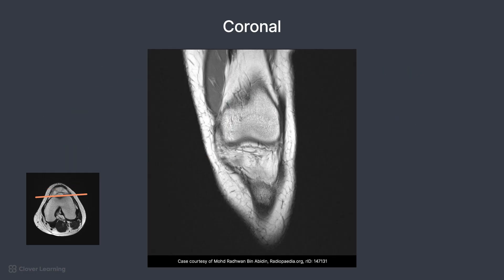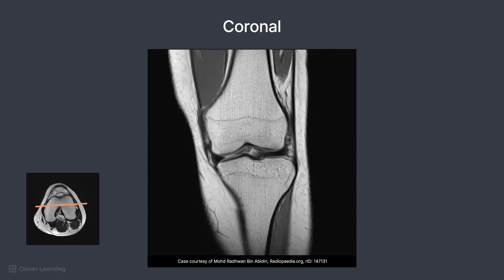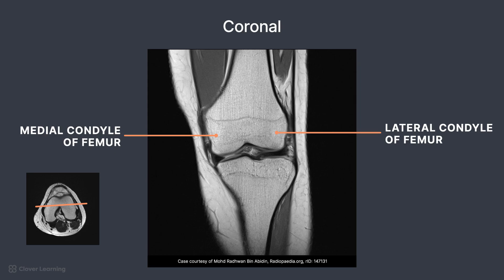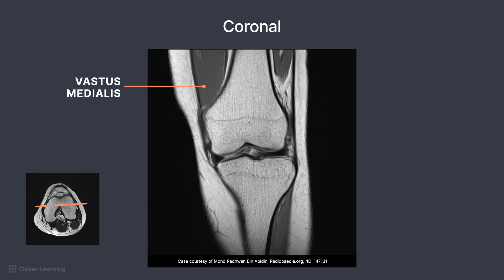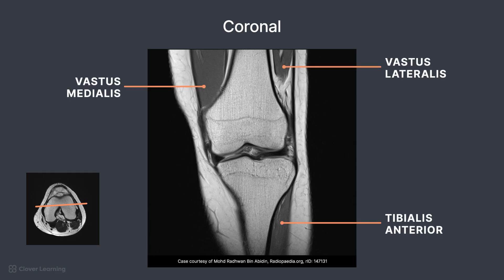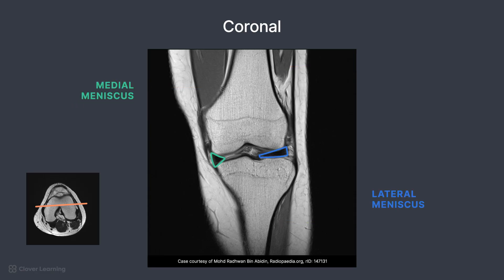Moving posteriorly, the femur emerges with the vastus medialis muscle. Arriving about halfway through the knee joint, the medial and lateral condyles of the femur and the tibial plateau are visible. Muscles demonstrated include the vastus medialis, vastus lateralis, and tibialis anterior. The medial and lateral menisci are seen here, again in a somewhat triangular shape.